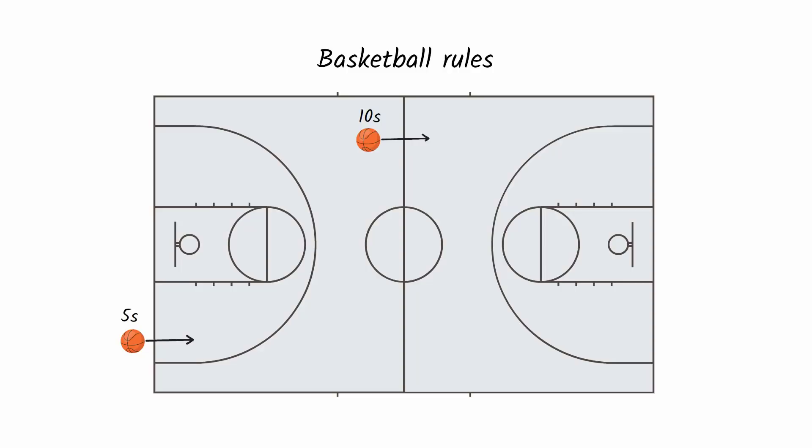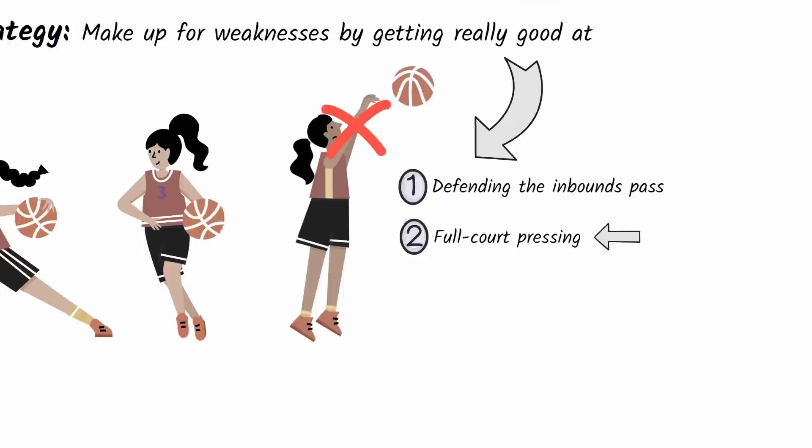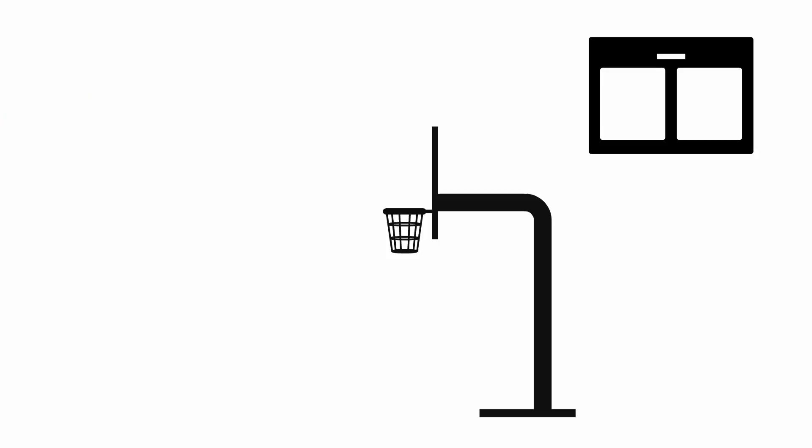So if Redwood City could prevent their opponents from inbounding the ball on time or getting the ball across half court in time, they could force their opponents to turn over the ball before they had a chance to utilize their superior shooting and passing skills. Redwood City dedicated their practices to mastering the full court press and being the fitter, faster team. It paid off.